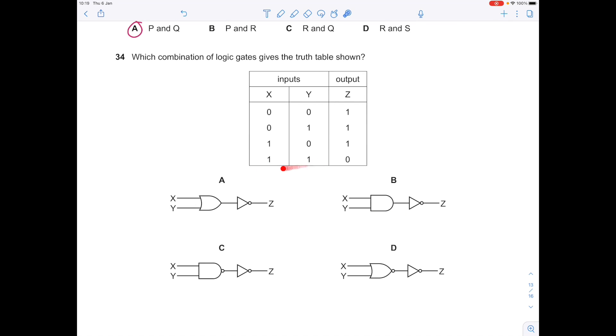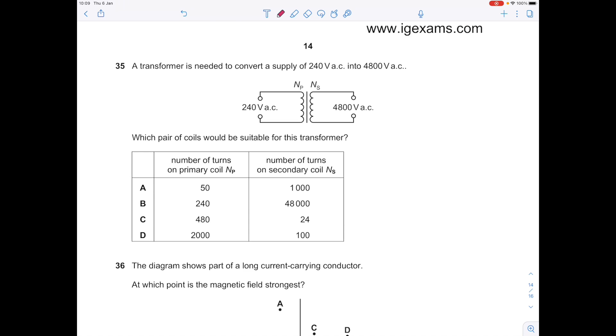If both X and Y are 1, the output from the AND gate will be 1, so the output at Z through the NOT gate will be 0. Therefore our bottom line is correct and that actually means that B is the right answer. That was an awful lot of effort for 1 mark.